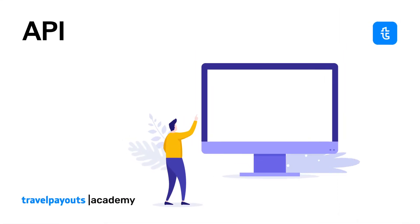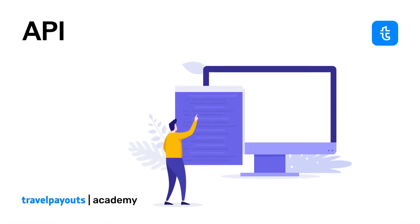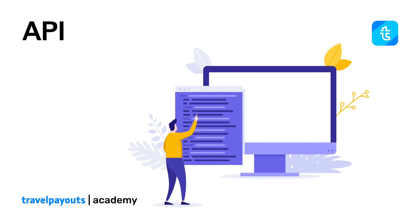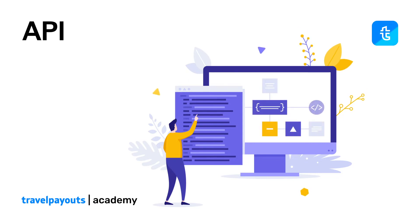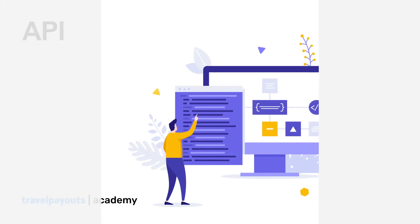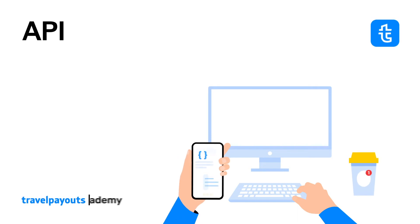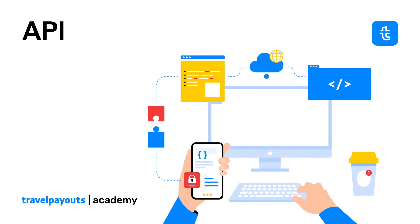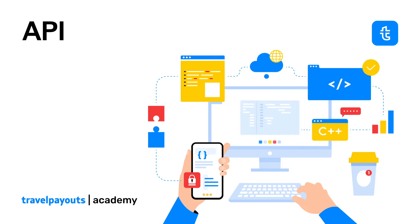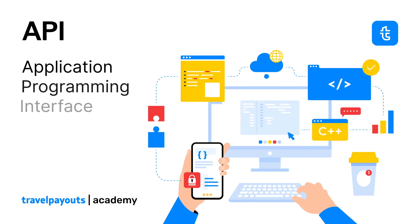The next tool we will take a look at is API. It's one of our most complex tools and it requires some coding skills or a developer's help. But what exactly is API and how can you use it? In a nutshell, API is short for Application Programming Interface and can be defined as a set of rules that programs use to interact with one another.